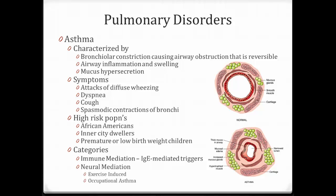Another disorder is asthma, characterized by bronchial constriction of the airways. Instead of a wide lumen, the airways become inflamed, swell, and start secreting mucus, reducing the ability to get air into the lungs. Symptoms include diffuse wheezing, dyspnea, cough, and spasmodic contractions of the bronchi. High-risk populations include African Americans, inner-city dwellers, and premature low-weight children. About 50% of asthmatics are younger than age 10, and it is more than twice as common in boys than in girls.